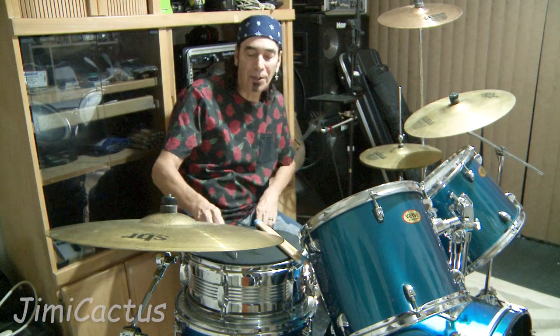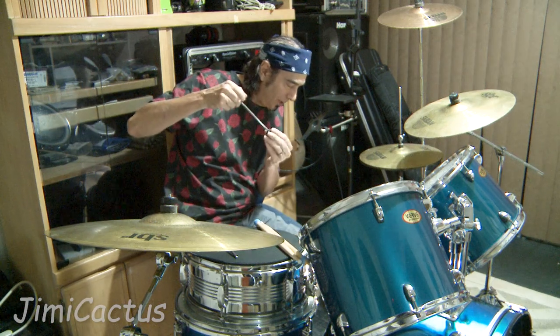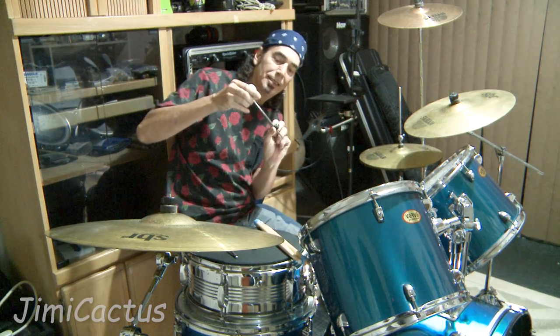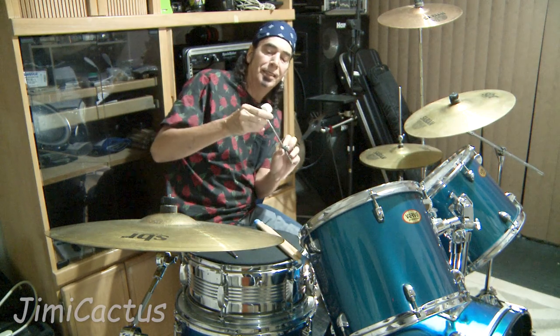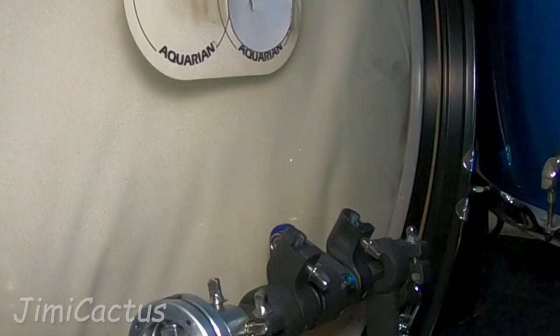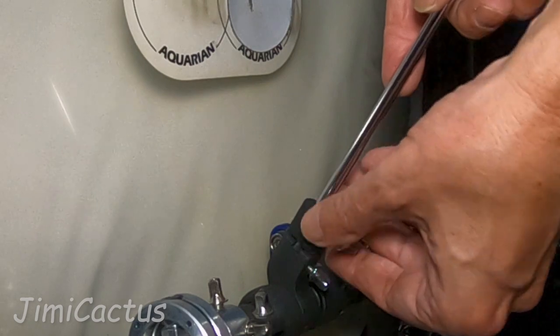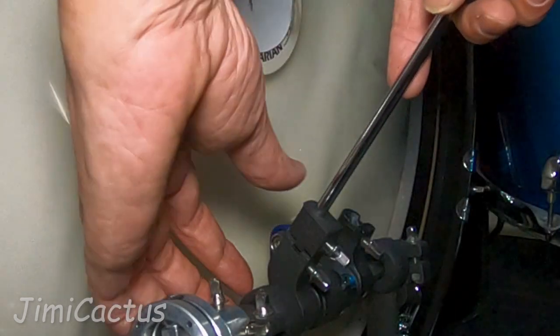So the first thing we want to do is put the lock washer back on. It kind of goes like this. Put that in the sleeve, and then like I said, I like to just bottom it out.